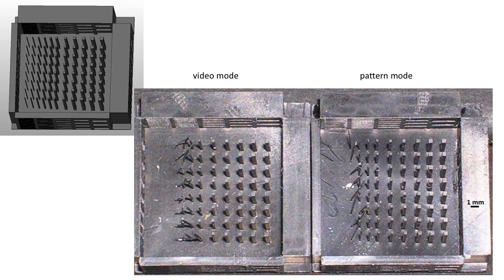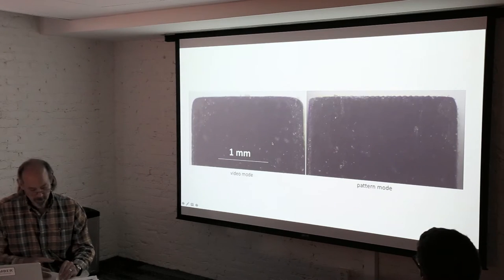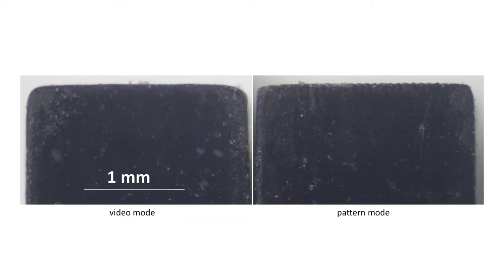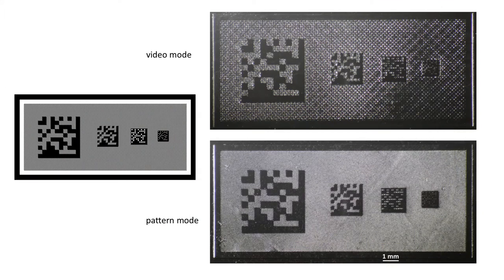So we can also print finer 3D features in pattern mode than we can in video mode. This is a test geometry of Brian's with posts that go from half a millimeter square down to 50 microns. And you can see that in pattern mode, we actually are getting things printed for these tiniest, thinnest posts that just aren't getting printed in video mode. We can also get sharper corners when we print in pattern mode.